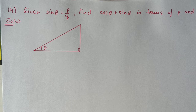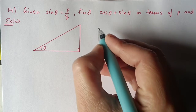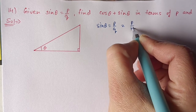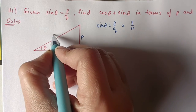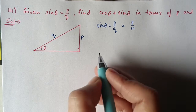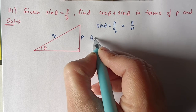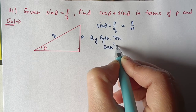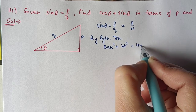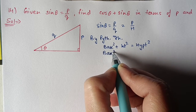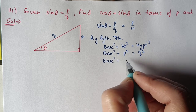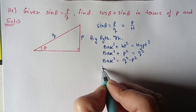Question 14: given that sin θ equals p by q, find cos θ plus sin θ in terms of p and q. sin θ equals p upon q, and since sin θ is perpendicular by hypotenuse, perpendicular is p and hypotenuse is q. By Pythagoras theorem: base square plus height square equals hypotenuse square. Height is p and hypotenuse is q, so base square equals q square minus p square, meaning base equals root of (q squared minus p squared).